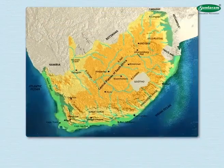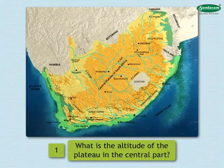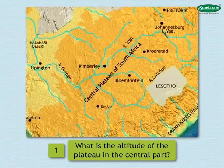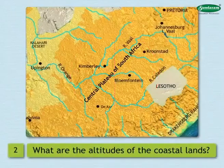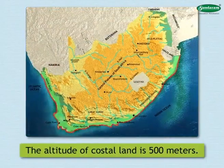Use the map to understand the physiography of the country and answer the following questions. 1. What is the altitude of the plateau in the central part? The altitude of the plateau in the central part is around 300 meters. 2. What are the altitudes of the coastal lands? The altitude of the coastal land is 500 meters.